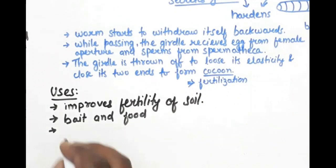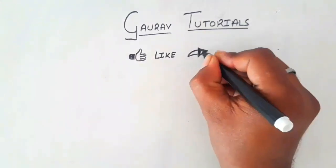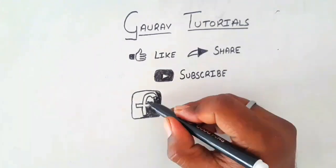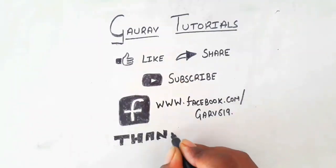Now we talk about uses. Earthworms are used to improve the fertility of the soil, and they are also used as bait and food. So boys, this was it. I hope you guys enjoyed it and liked it. Hit the like button.